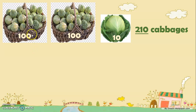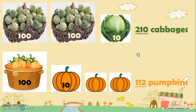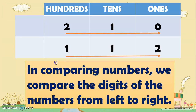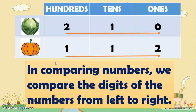Remember that Mr. Cruz harvested 210 cabbages and 112 pumpkins, and we are going to compare them. In comparing numbers, we compare the digits of the numbers from left to right. We're going to start first in the hundreds place. Identify if the first number is more than or less than the next one. If they are the same, go to the tens place. Identify the digits again — if the first digit is more than or less than the next one, you may compare them. If they are the same, go to the ones place.